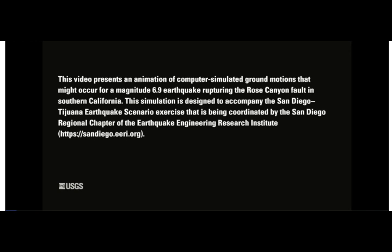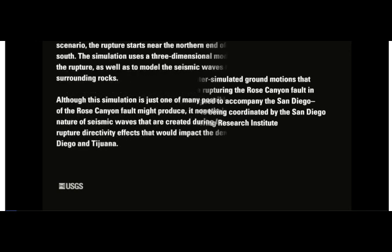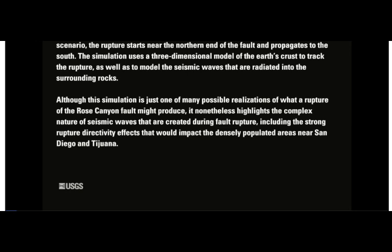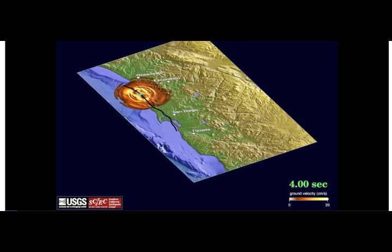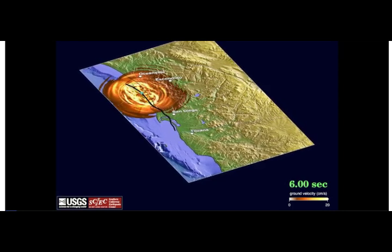This animation is done by USGS. It's not an actual earthquake — it's a computer animation of the scenario of a 6.9 magnitude earthquake on the Rose Canyon Fault. The video presents computer simulated ground motions that might occur from this earthquake rupturing the Rose Canyon Fault in Southern California.